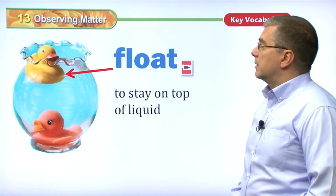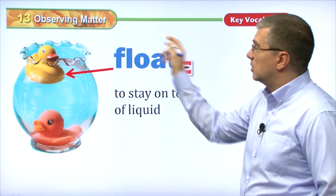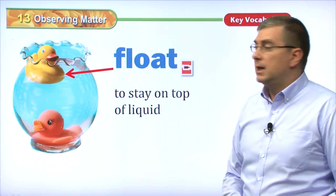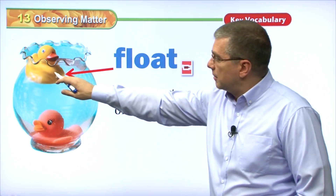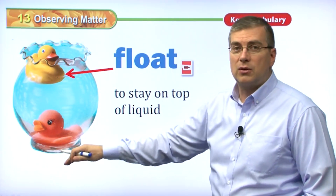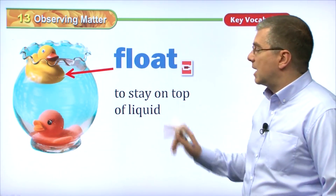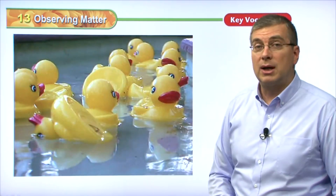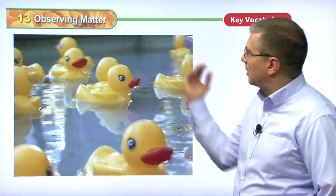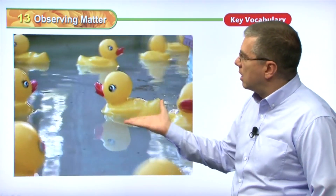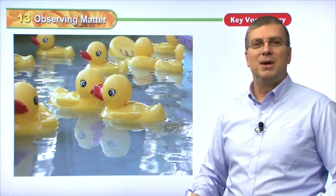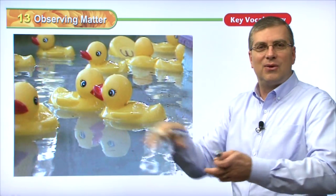One property of an object is that it floats. To stay on top of a liquid means to float. You see this rubber ducky here — it's light, so it stays on top of the water. This other rubber ducky is heavy; maybe it has some metal in it, so it didn't float — it went to the bottom. Let's take a look at a video of this property. All these little rubber duckies are coming around the corner — the water is moving and these rubber duckies are floating on top of the water. Maybe you have some rubber duckies at home; in the bathtub they float around. Very interesting.